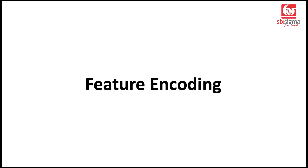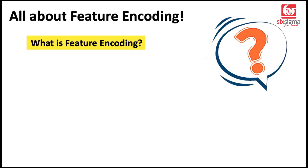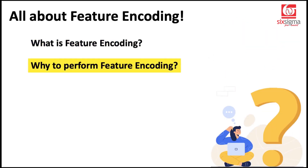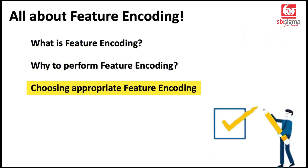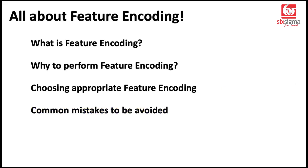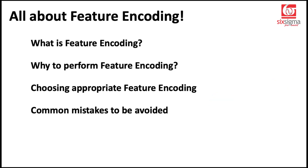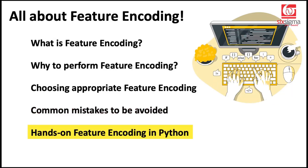We're going to cover all about feature encoding, starting with what is feature encoding, why to perform feature encoding, choosing appropriate feature encoding, and what are the common mistakes to be avoided. We typically emphasize on this because we tell you how to practically implement these things. Before you apply feature encoding, you need to be aware of the common mistakes that people make and what could be the consequences of those. And finally, we'll be covering the hands-on piece in Python.